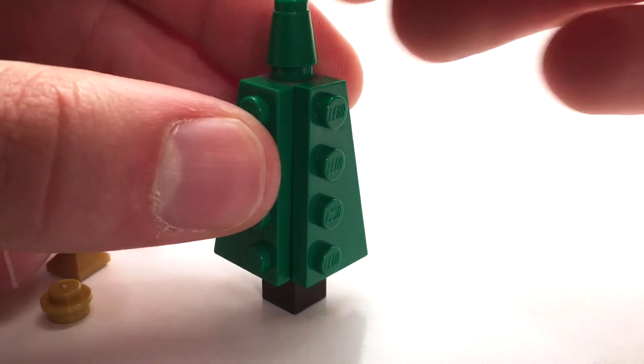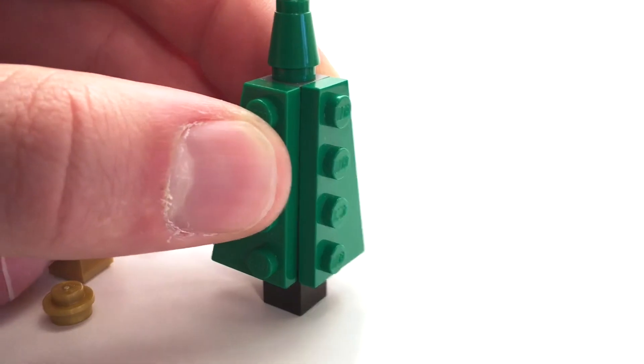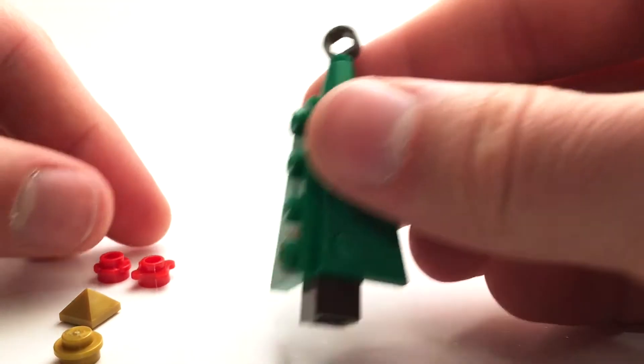Up top we've got a cone and then this, I think it's a wrench piece actually, that forms a nice loop for the ornament.